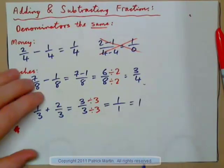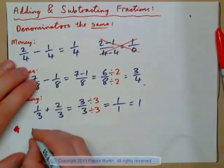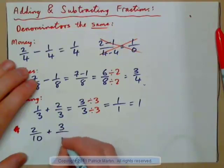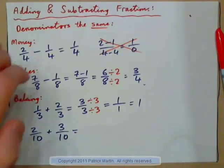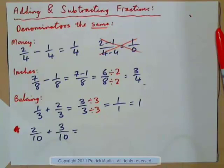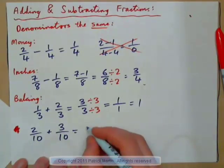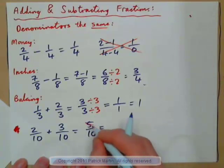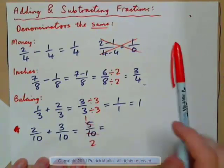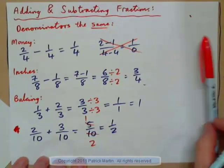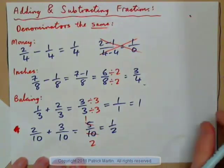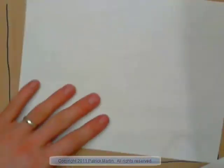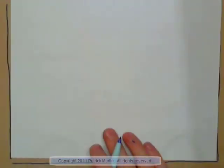If you had 2 dimes plus 3 dimes — think about money — what would that be? 5 dimes. Put in lowest terms: 5 goes into 5 once, 5 goes into 10 twice, and that's a half — half a dollar. This is all very much like something we do in algebra called adding like terms.